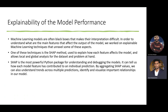We then concentrated on the explainability of the model. Machine learning models are kind of black boxes where it is very difficult to interpret and understand how they predicted the output. To address this, we followed a technique called the SHAP method, which helps us understand and explain how each feature affects the model. By aggregating these SHAP values, we can also understand trends across multiple predictions and visualize their relationships.